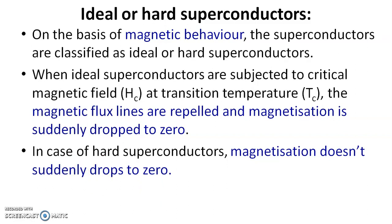To summarize the Meissner effect: the ejection of flux lines by a material under the influence of a magnetic field is called the Meissner effect. A superconductor ejects the flux lines at or below transition temperature, whereas an ordinary conductor does not eject the magnetic flux lines.